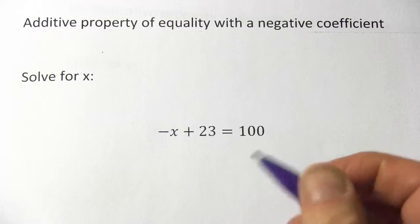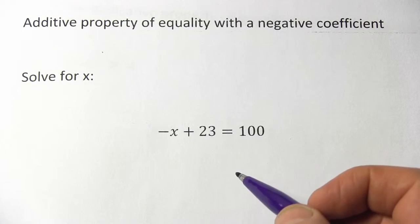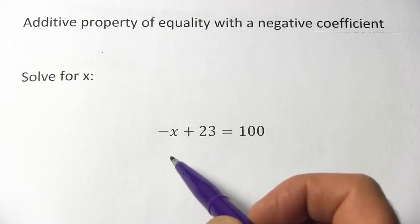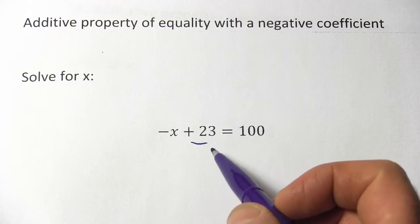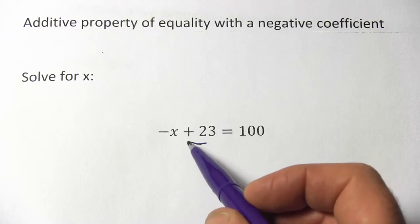In this problem we need to solve for x and there are a couple of steps to do that. First of all we want to get x alone on one side of the equation and right now we've got this plus 23 hanging out here so we want to get rid of that.